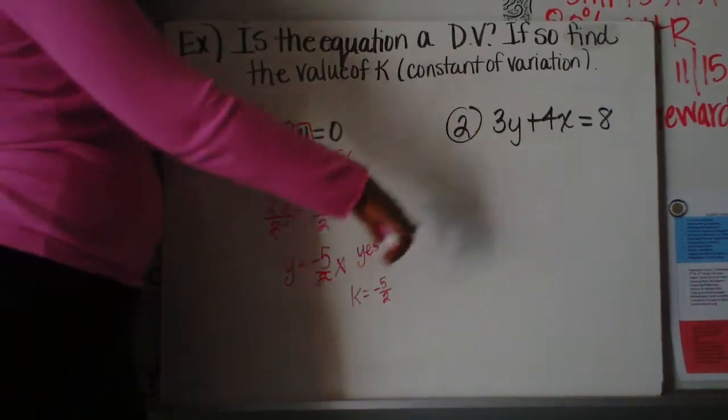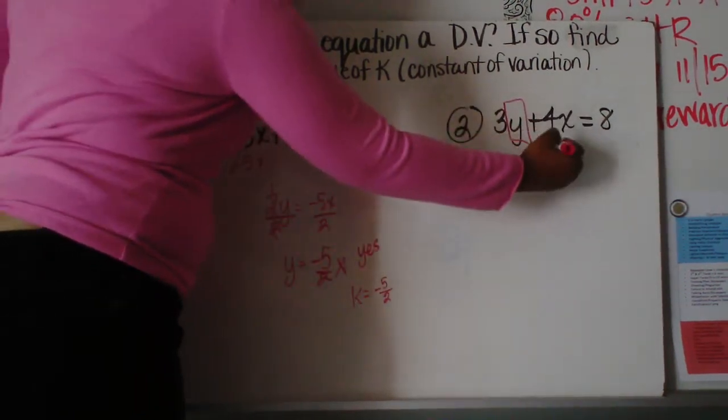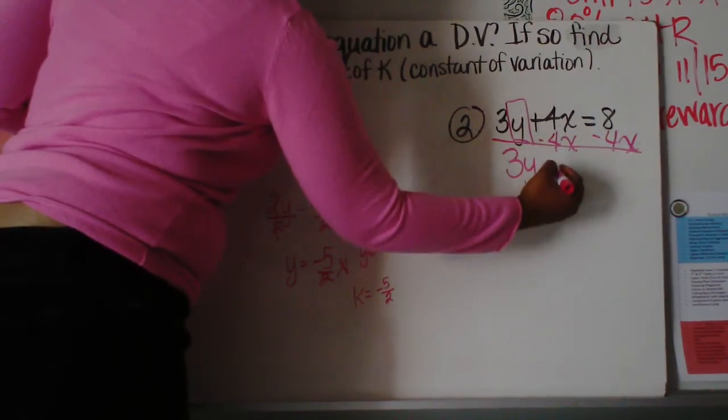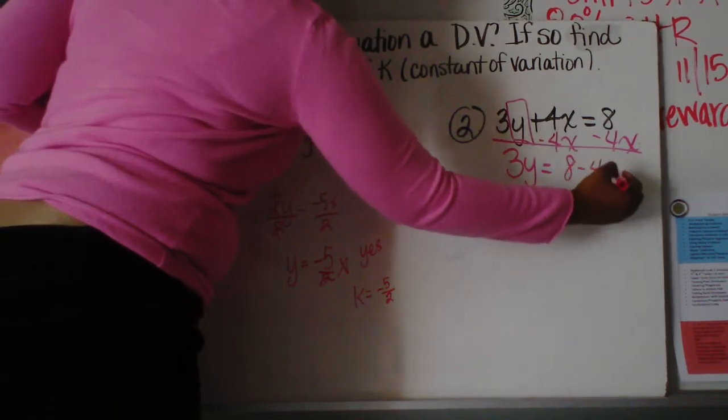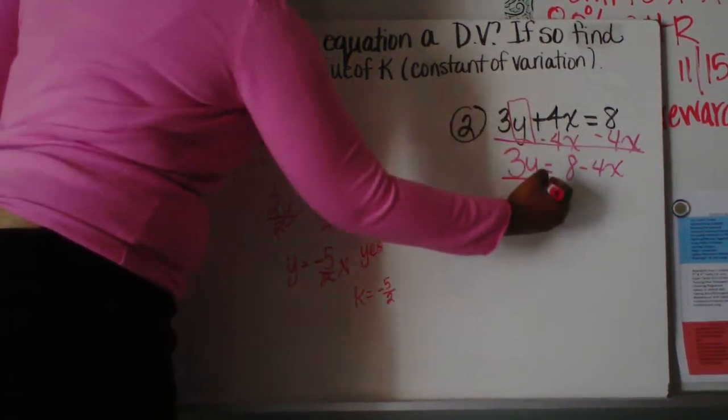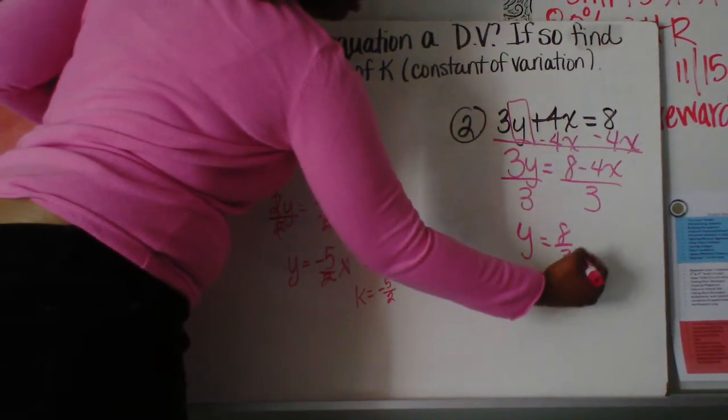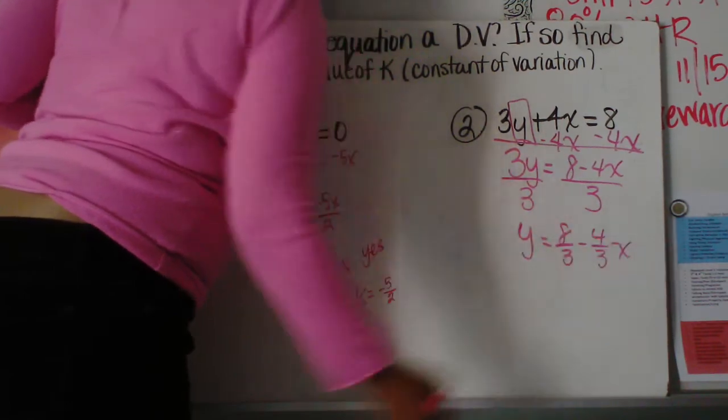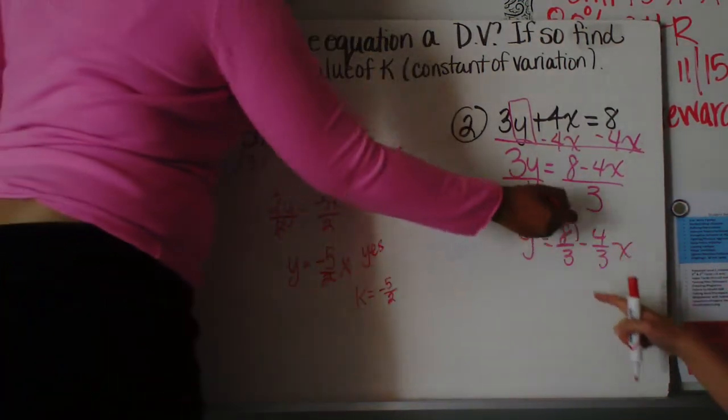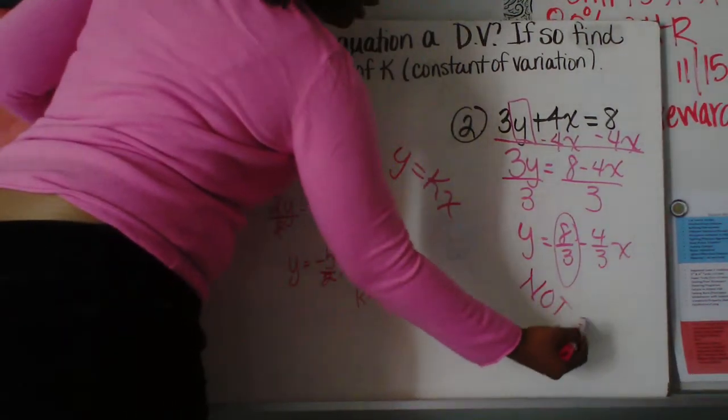Okay, the second problem, you have 3y plus 4x equals 8. So again, we want to solve for y, so we're going to subtract 4x on both sides. And you end up with 3y equals 8 minus 4x. You can't combine 8 and 4x, because 8 doesn't have an x with it, so it's not like terms. The last thing you want to do is divide by 3. So you end up with y equals 8 over 3 minus 4 over 3x. Now, the form for direct variation is y equals kx, where you're not adding or subtracting anything. But here, we have the 8 thirds, so this is not a direct variation.